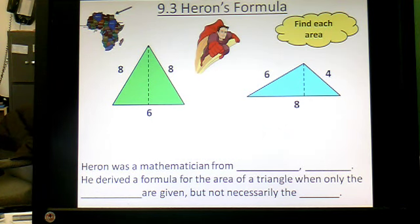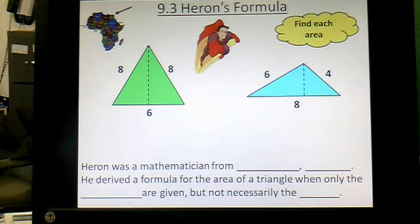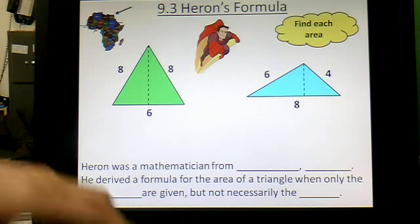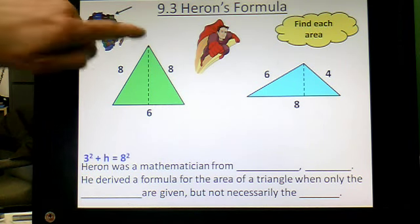And like we did a lot of times yesterday drawing in apothems, it cuts, you know, for this one, because these are both 8 because it's isosceles, it cuts the 6 into 3 and 3. You guys know that. And you can use Pythagorean theorem to find the altitude on there.